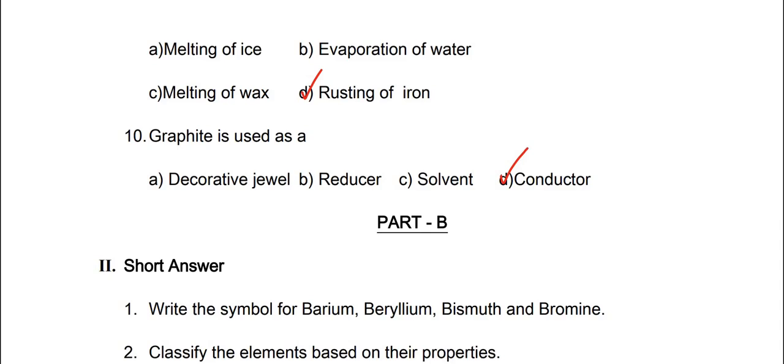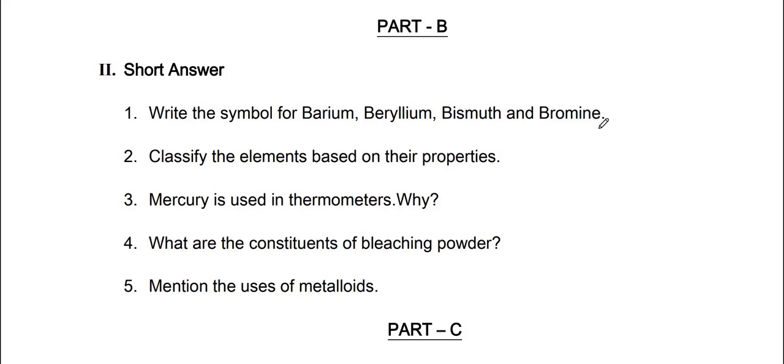Okay, so next, short answers. Write the symbol for barium, beryllium, bismuth and bromine. So for barium, B-A. Beryllium ka, B-E. Bismuth ka, B-I. And bromine ka, B-R. Okay, idh daan vandhi symbols.